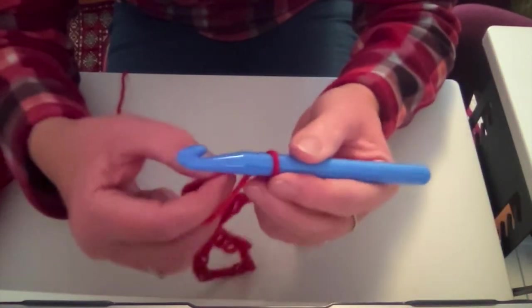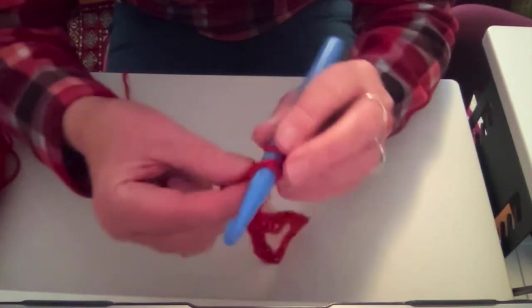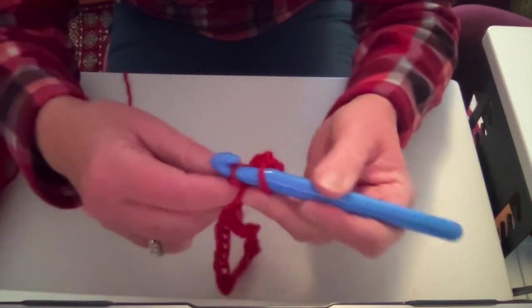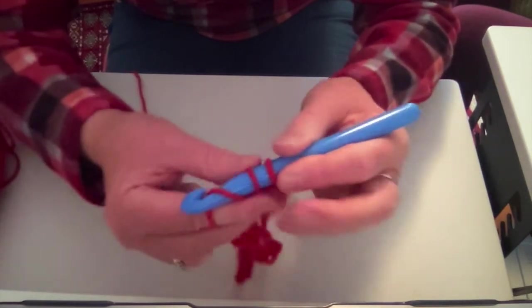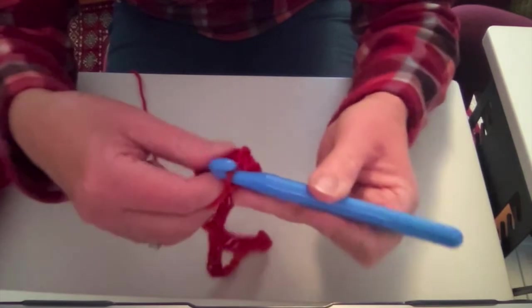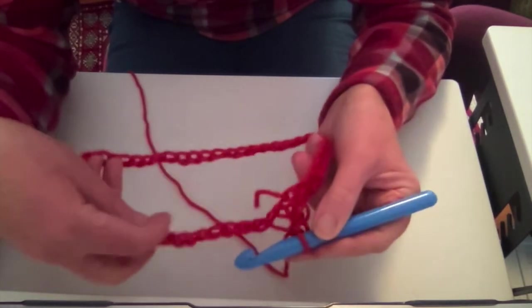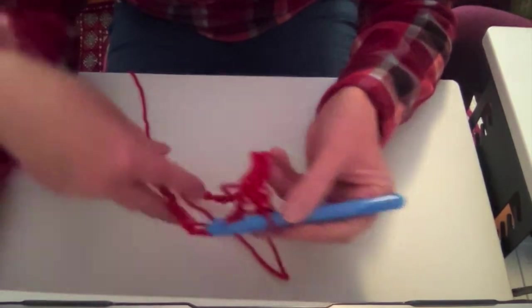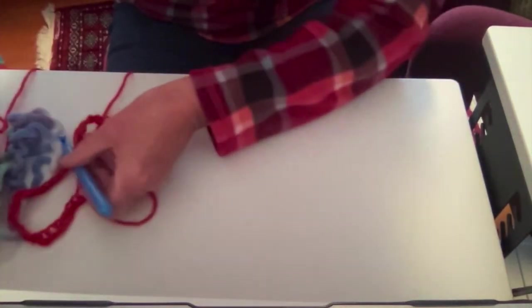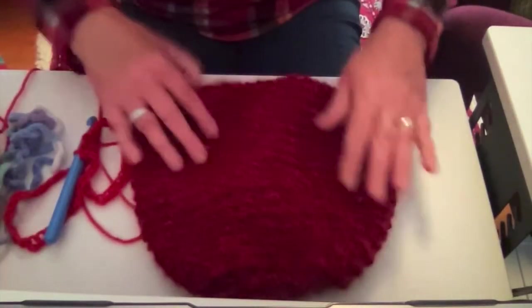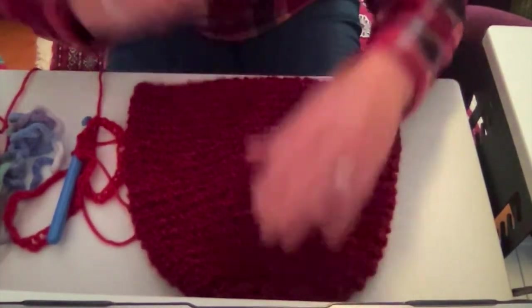Find the next loop, down, around one, pull out two. And you just keep going around and around and around and around until you get thick enough or tall enough where you think that's your hat.